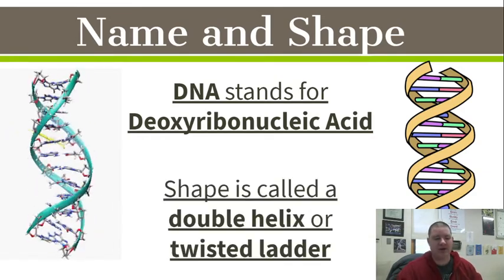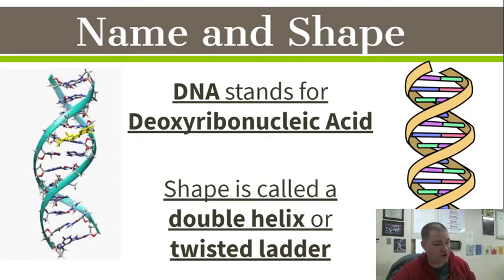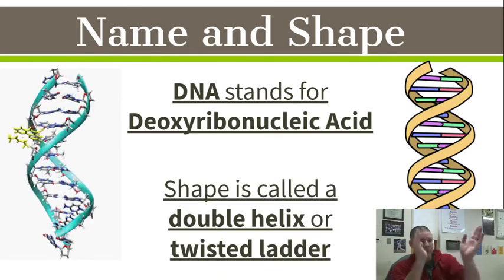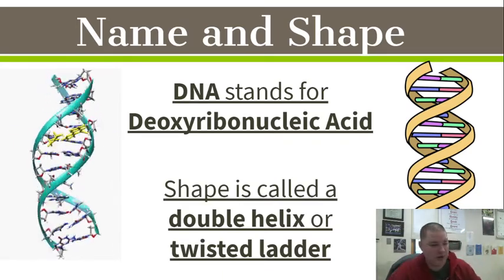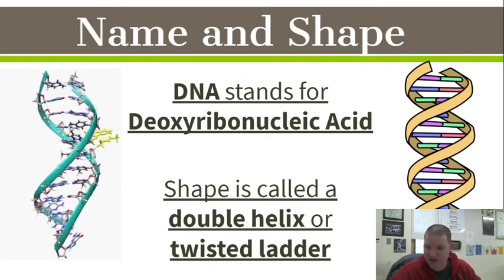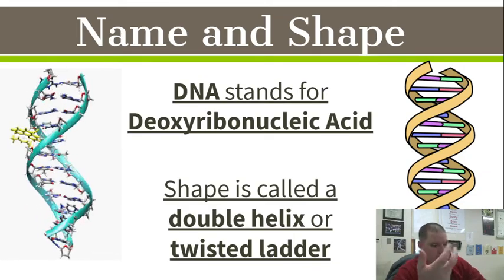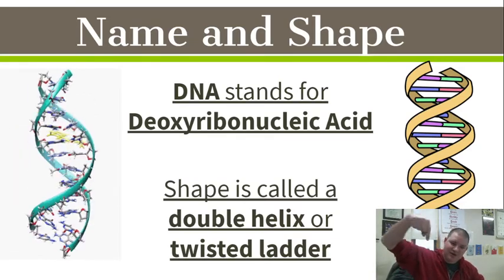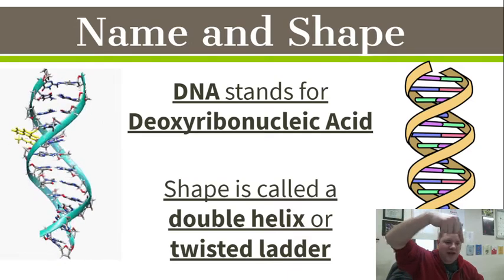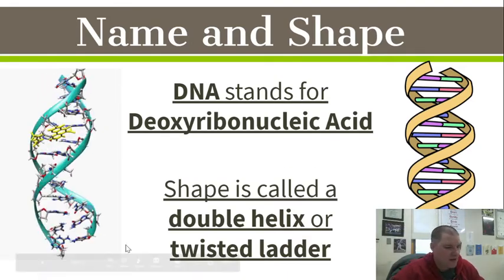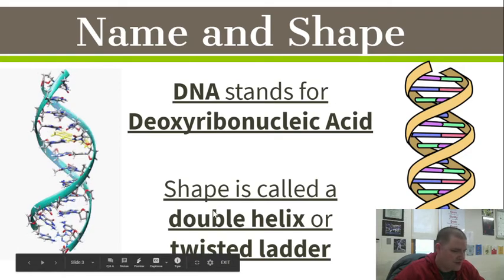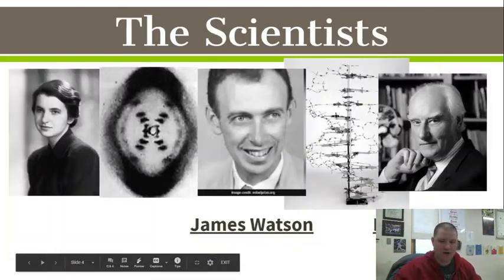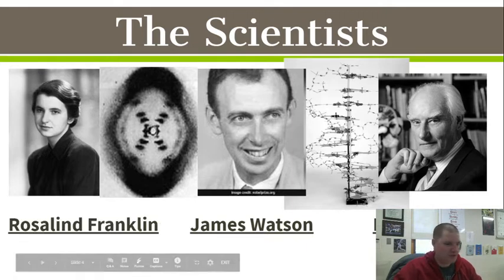We're going to look at why that is over the course of the next couple of days. The shape of it is this fancy double helix formation. Sometimes it's called the twisted ladder because it kind of looks like a ladder that you twist on the rungs. Some people call it a spiral staircase, like one of those fancy ones you see in a castle. But the official scientific name is the double helix — that's usually what we go with.